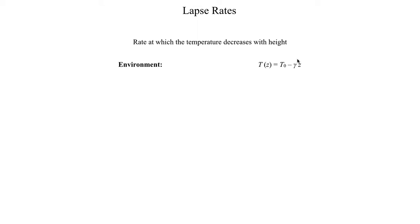This is what you would actually measure — say, if you were to launch a weather balloon and sample the temperature at each level in the atmosphere, this is the result you would measure as it rises. For example, if your environmental lapse rate is 6 degrees Celsius per kilometer, that means going up 1 kilometer decreases temperature by 6°C, and going up 2 kilometers decreases it by 12°C, and so on.